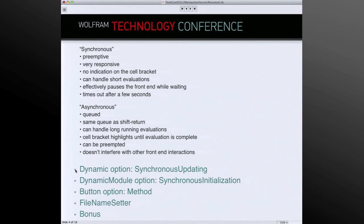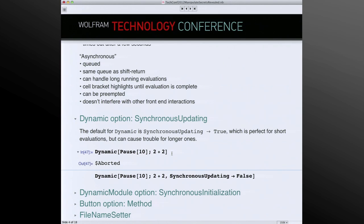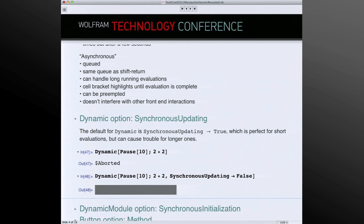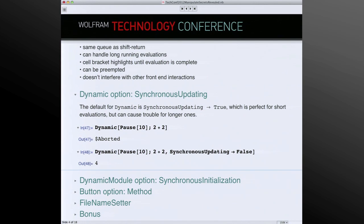So how do we access long-running state from places that want to be fast and responsive? In the Dynamic primitive — the wrapper you put around something when you always want its current value — there is a SynchronousUpdating option. By default, Dynamic's synchronicity is true, so after a few seconds it times out and you see a placeholder. If instead this is handled as an asynchronous evaluation, the front end moves on to accept other interface input and leaves a space for where it will fill in content later. SynchronousUpdating is the way to tell Dynamic: don't bog down everything, go off and do what you have to do, and come back when you're ready.